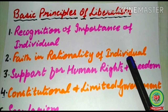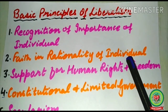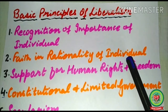The second principle is faith in the rationality of the individual. Supporters of liberalism lay stress on the organized intellectual power of human beings as the basis of all human progress and development. Every individual knows well what is good for him and what is not. Man is a rational animal — being rational is God-gifted. Due to this rationalism, liberals had little faith in superstitions and irrational traditions.